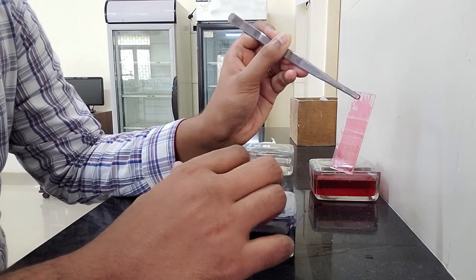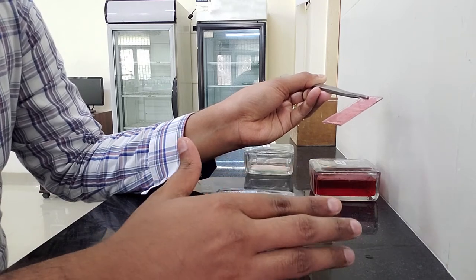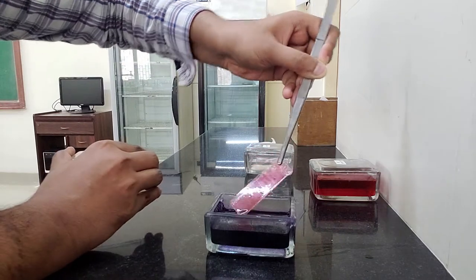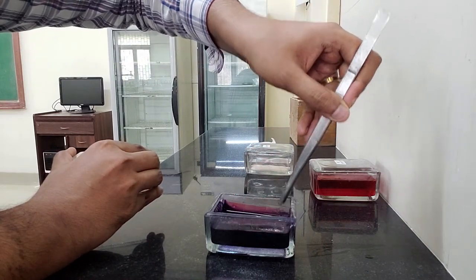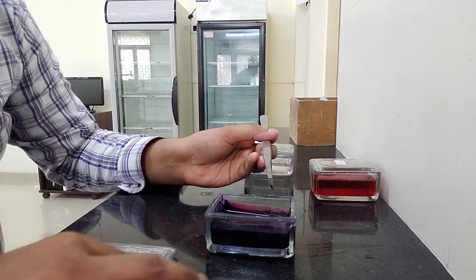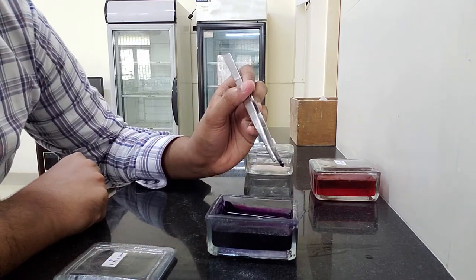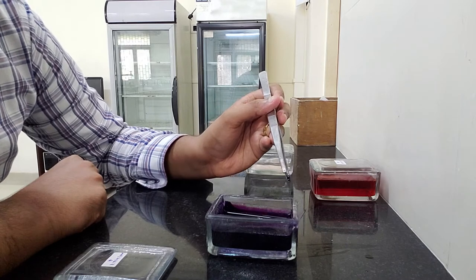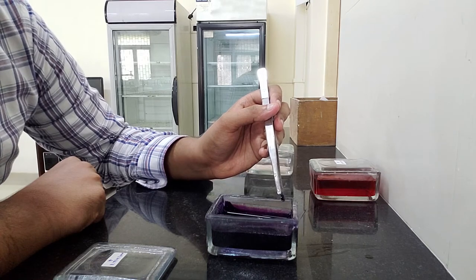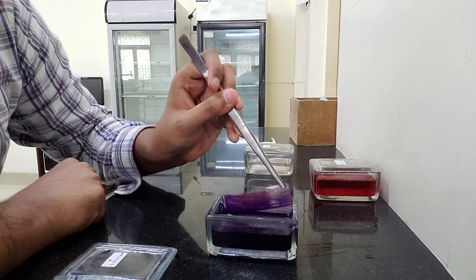The slide is a little wet, so you can wait for some time and then you can put it in Field stain A. In Field stain A we are going to keep the slide for around 10 seconds. I'm going to open it and dip it into Field stain A, and gently see to it that it covers my entire slide and start counting till 10.